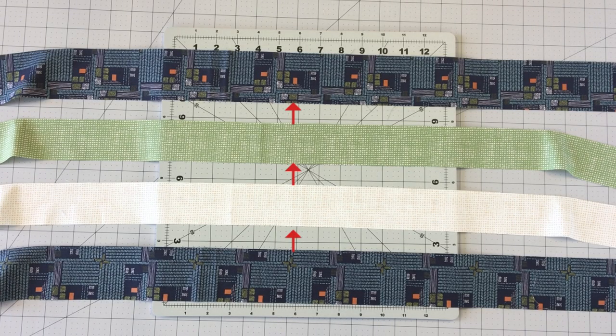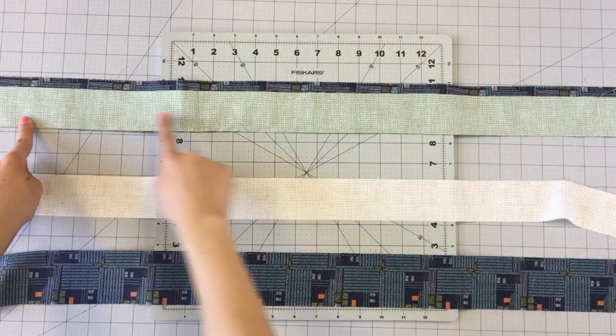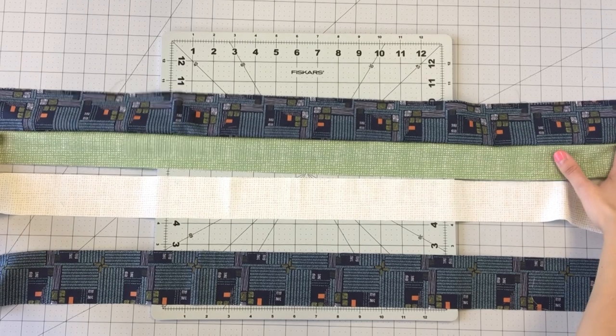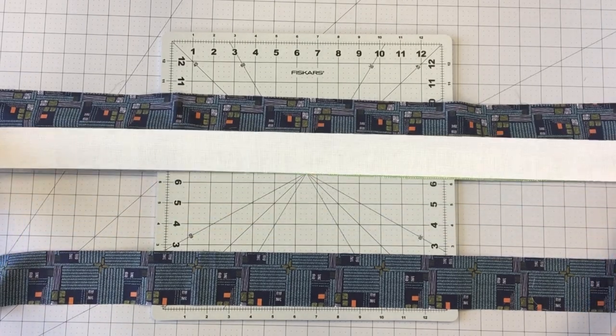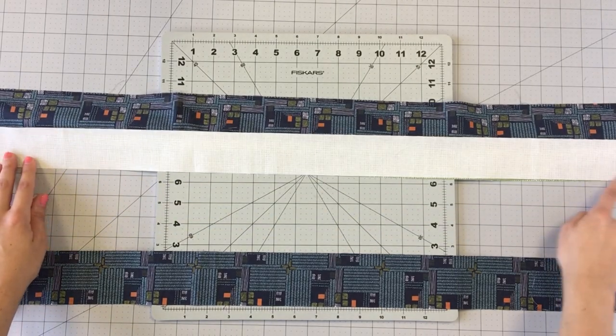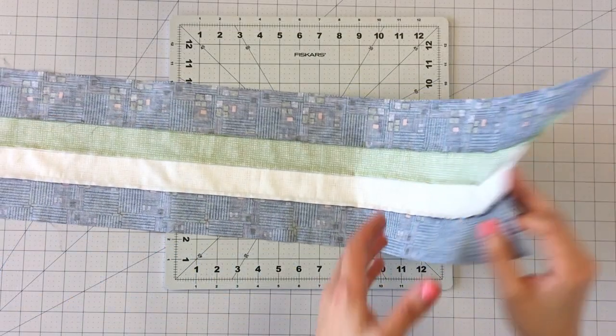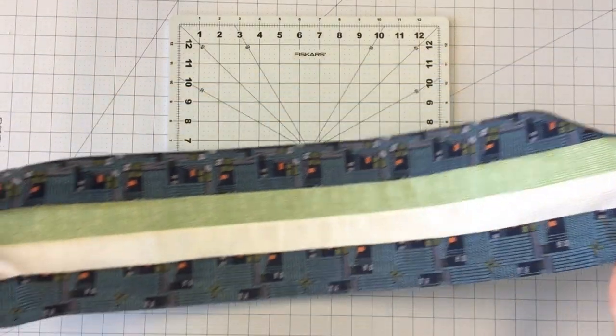Sew your width of fabric strips together. Alternate sewing from the left to attach one strip, and then start sewing from the right to attach the next. Repeat this process to complete your strip set. Press seams in one direction.